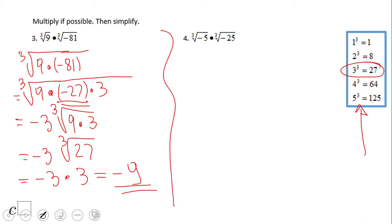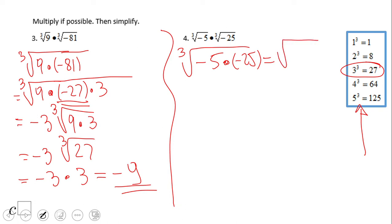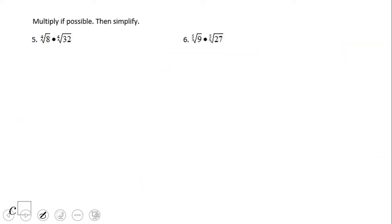Number four is interesting because you cannot rewrite negative 5 or negative 25 in a useful factor form. So in this case, I will multiply directly: negative 5 times negative 25 gives 125. So sometimes you may want to multiply instead of factoring out.